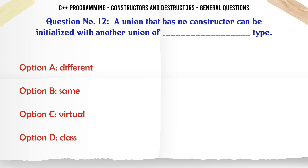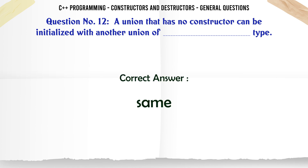A union that has no constructor can be initialized with another union of type: A. Different. B. Same. C. Virtual. D. Class. The correct answer is Same.